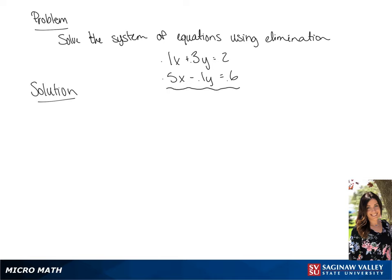So we're going to solve the system of equations using elimination. The first thing we're going to do is multiply the second equation by 3. This is going to give us 0.1x plus 0.3y equals 2, and then the second equation will be 1.5x minus 0.3y equals 1.8.